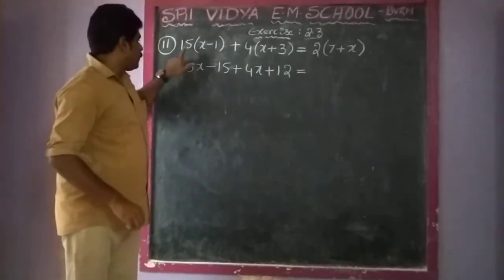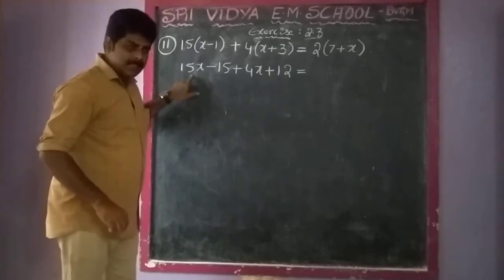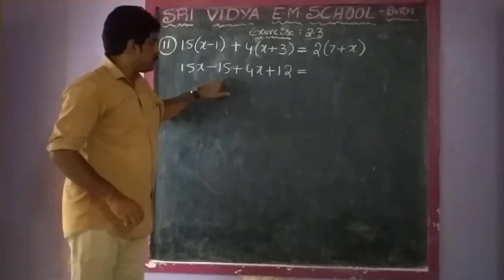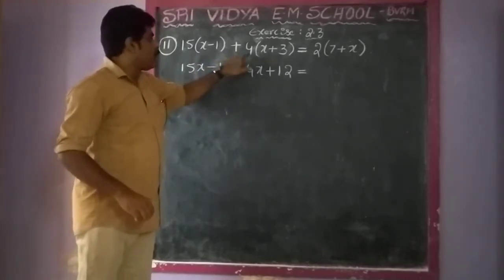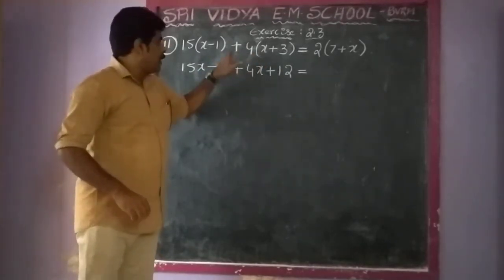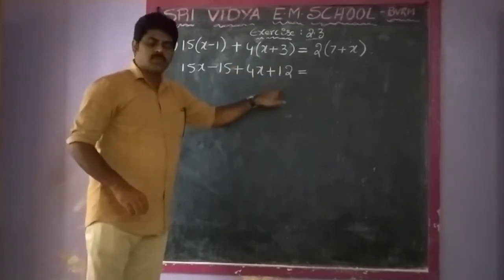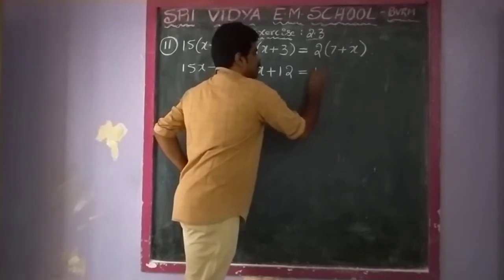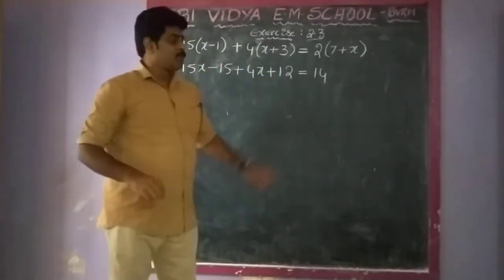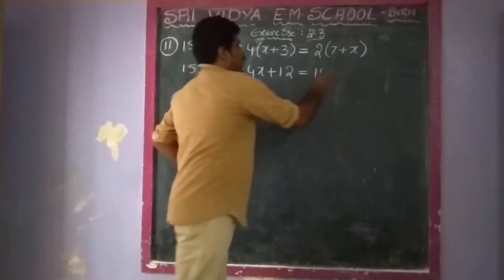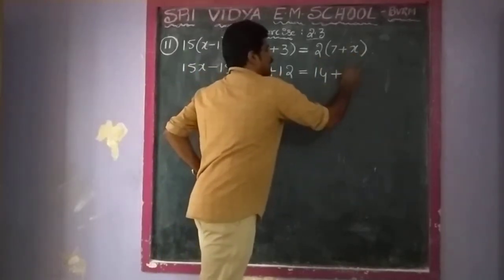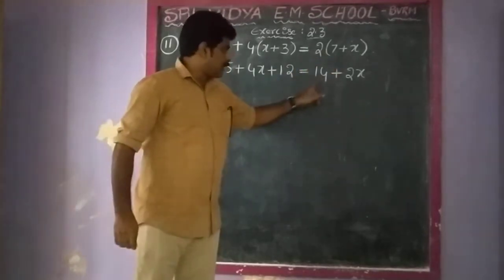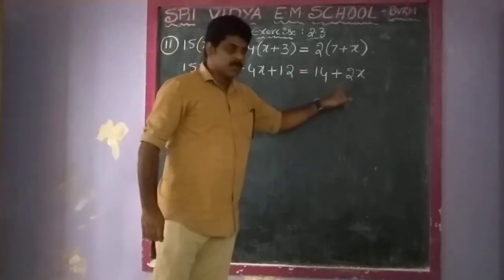Look at again: 15 into x gives 15x, plus into minus gives minus 15 into 1 which is 15. Plus 4 into x gives 4x, plus into plus gives plus 4 into 3 which is 12. This is equal to 2 into 7 which is 14, and 2 into x gives 2x.